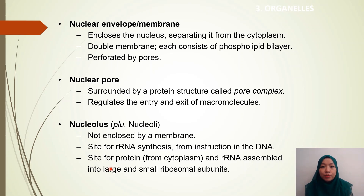Now we will look into the components of the nucleus. The first is the nuclear envelope, or nuclear membrane, which encloses the nucleus by separating it from the cytoplasm. It is a double membrane, each consisting of a phospholipid bilayer, and it is perforated by pores called nuclear pores. Each nuclear pore is surrounded by a protein structure called the pore complex, which is made up of protein and regulates the entry and exit of macromolecules.